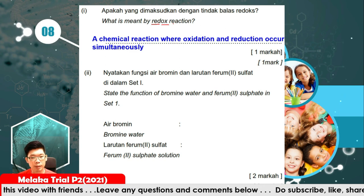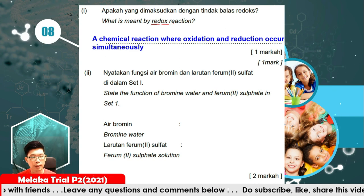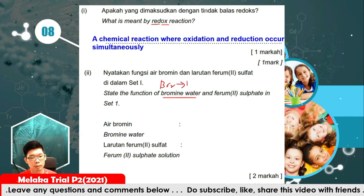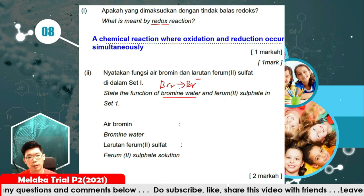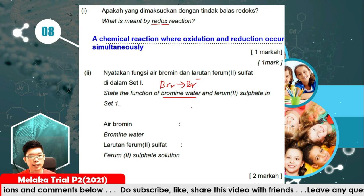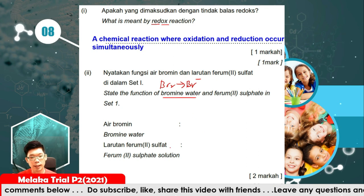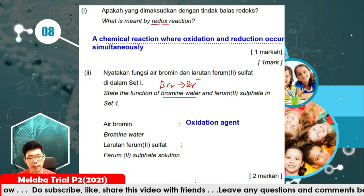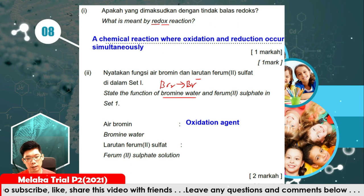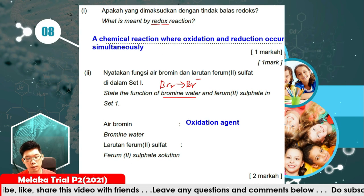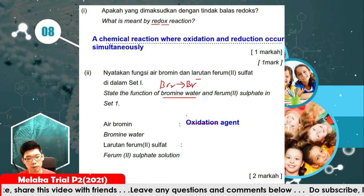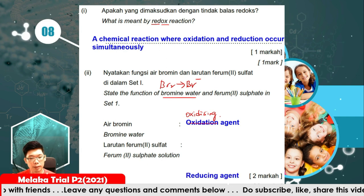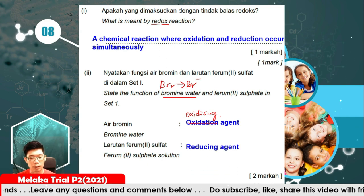State the function of bromine water and iron sulfate in Set 1. Bromine changes to bromide ions, so it undergoes reduction — bromine water is the oxidising agent. Iron sulfate undergoes the opposite process; it is the reducing agent and undergoes oxidation.